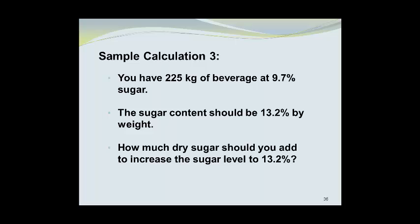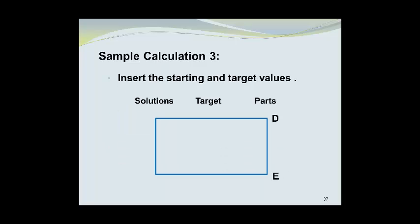So we want to know how much dry sugar should be added to increase the sugar level to 13.2%. Once again, we will draw this rectangle and label the solutions, the targets, and the parts. We will begin by inserting the starting and target values. We have a beverage of 9.7% solids, and we have dry sugar with 100% solids present. The target is 13.2% solids.